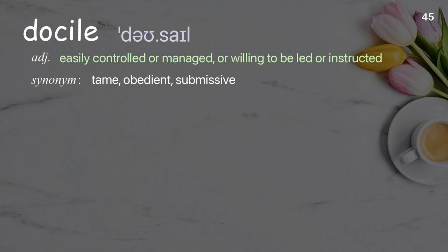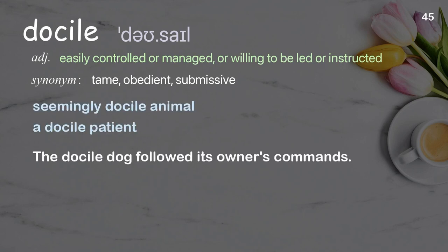Docile: easily controlled or managed; willing to be led or instructed. Examples: seemingly docile animal; a docile patient. The docile dog followed its owner's commands.